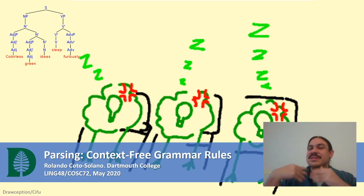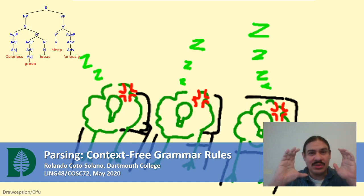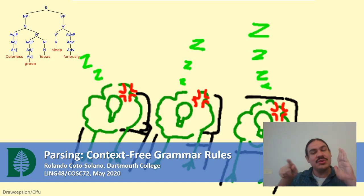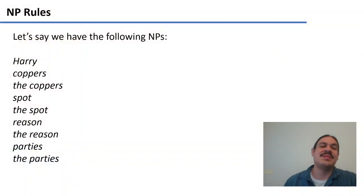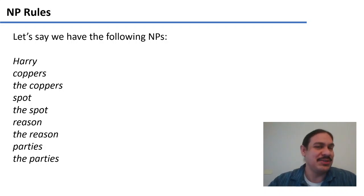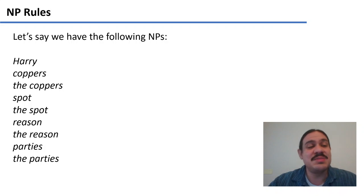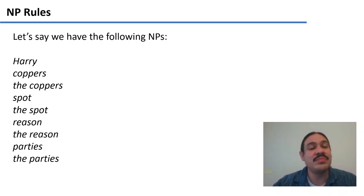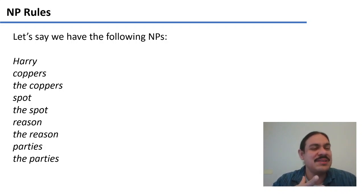Hi again. Let's continue exploring different constituents and how we can build rules that can explain the internal structure of our constituents. So let's say we have some noun phrases that look like these: Harry, coppers, the coppers, spot, the spot, reason, the reason, and so forth. All those are possible noun phrases in English. However, you can probably see that there are a few regularities popping up in the data.